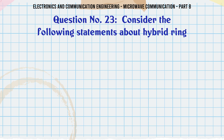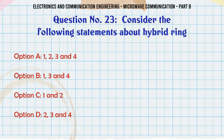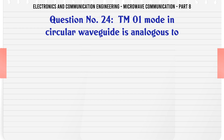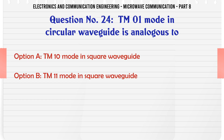Consider the following statements about hybrid ring — A. 1, 2, 3 and 4, B. 1, 3 and 4, C. 1 and 2, D. 2, 3 and 4. The correct answer is 1, 3 and 4.